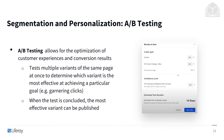Next, let's talk about A/B testing. A/B testing allows for the optimization of customer experiences and conversion results. It's going to test multiple variants of the same page at once to determine which variant is the most effective at achieving a particular goal. I can have two different pages designed for winter deals, and see among my users at random which one gets more attention. When the test is concluded, the most effective variant can be published.